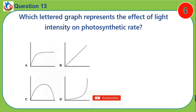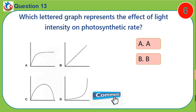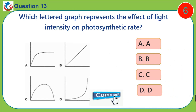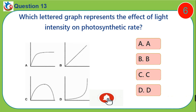Question thirteen: Which lettered graph represents the effect of light intensity on photosynthetic rate? Is it option A, B, C, or D?